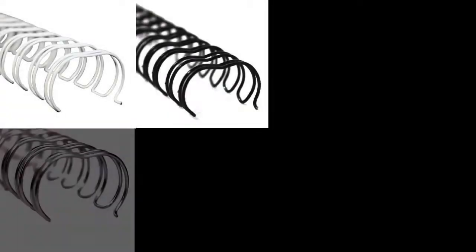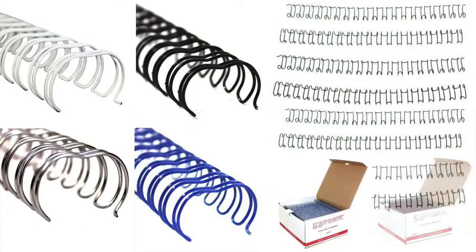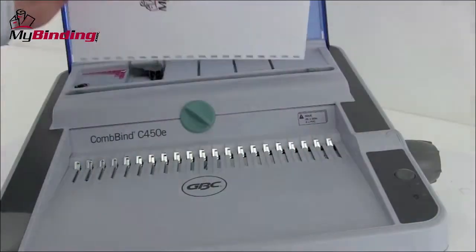These wires are sometimes called Ibico wires. That's because most commonly they are used with Ibico comb binding machines that include a built-in wire closer.